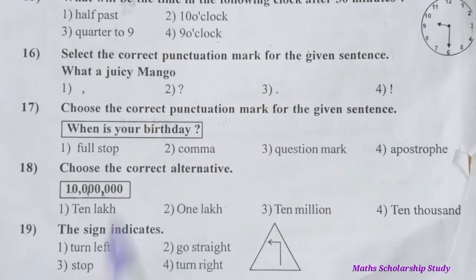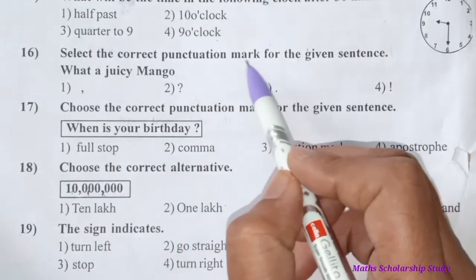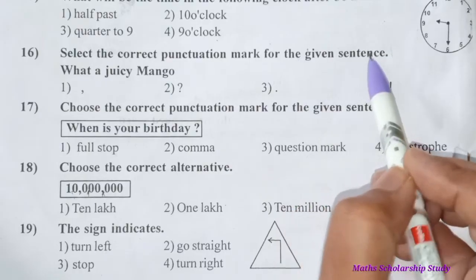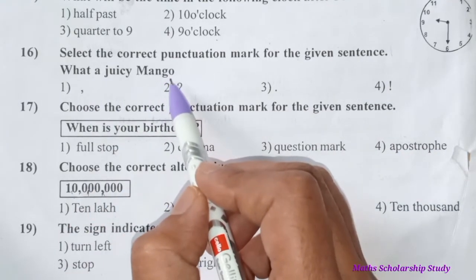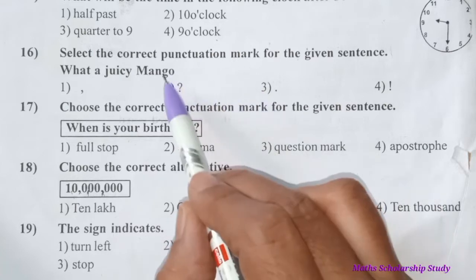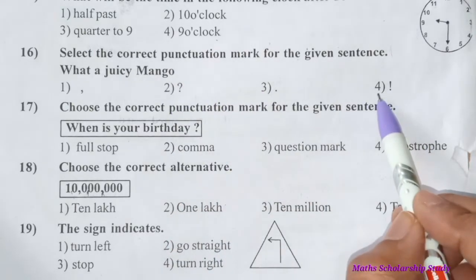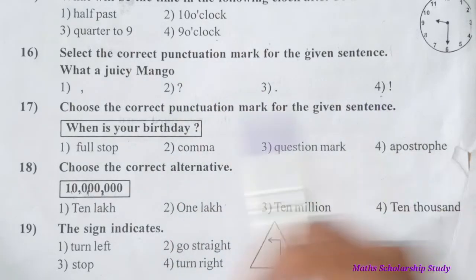Question number sixteen: Select the correct punctuation mark for the given sentence 'What a juicy mango!' This sentence requires an exclamatory mark. Option number four is the correct answer.